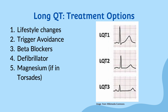Treatment for Long QT syndrome depends on the severity of symptoms and the specific subtype. For asymptomatic individuals, lifestyle changes such as avoiding activities that trigger symptoms may be sufficient. Medications such as beta blockers can be prescribed to slow down the heart rate and reduce the risk of torsades. In severe cases, an implantable cardiac defibrillator may be recommended. If the patient is in torsades, the first-line treatment is IV magnesium sulfate.